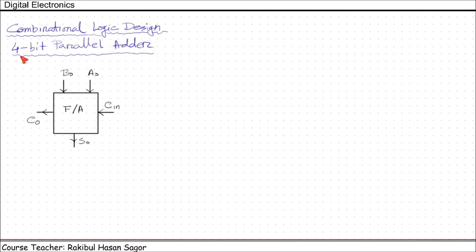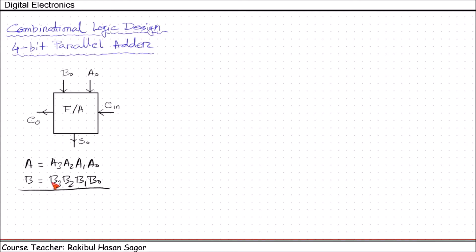Now we'll learn to design a 4-bit parallel adder using full adders. Suppose we have two 4-bit binary numbers A and B. A has bits A0, A1, A2, A3 and B has bits B0, B1, B2, B3. We need to design a circuit so that the addition result is shown as S0, S1, S2, S3, and after adding these two numbers we'll have a carry out.